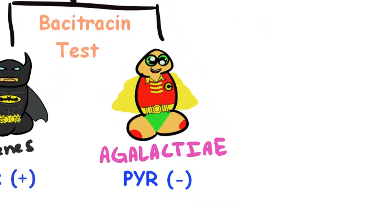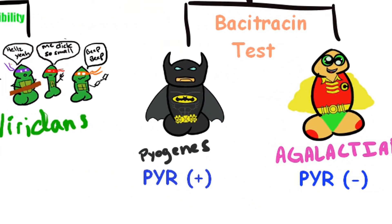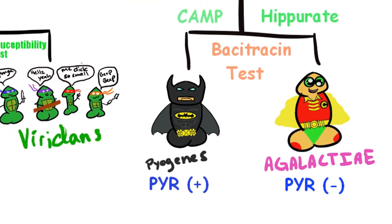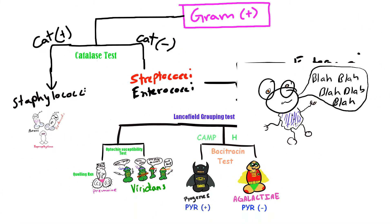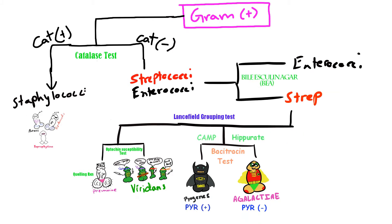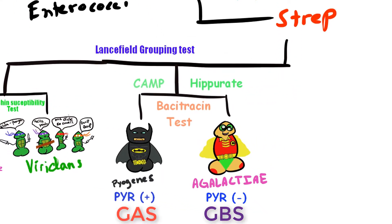We need to distinguish Streptococcus agalactiae from Streptococcus pyogenes, and we can do this with a few tests. One of them is the Lancefield grouping test, which groups bacteria from categories A through S based on the carbohydrate composition of bacterial antigens on their cell walls. Streptococcus agalactiae is categorized as Lancefield serogroup B — that's why it's also known as group B Streptococci, aka GBS — while Streptococcus pyogenes is group A Streptococci, aka GAS.